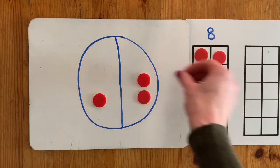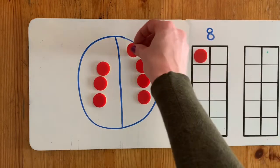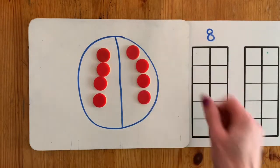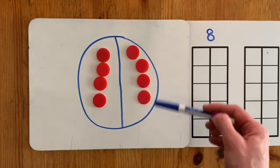One, one, two, two, three, three, four, four. So now I have eight split into two equal groups, two halves.